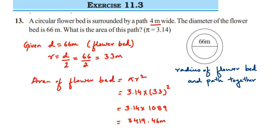The radius of the flower bed and path together equals the radius of the flower bed, 33, plus the path width of 4, which gives 37 meters. Using this, we will find the area of the flower bed plus path together.